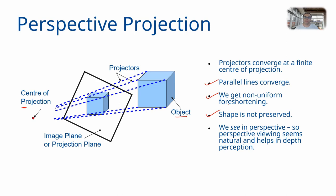Perspective projection is the most natural projection out of all that we have seen because it is very close to how we see. Our abstraction for the eye and for a real camera is the pinhole camera, which is a fairly good approximation. The perspective projection is exactly what happens in a pinhole camera. Perspective was discovered in art and illustration before it came to computer graphics, and even before it became mainstream mathematics.